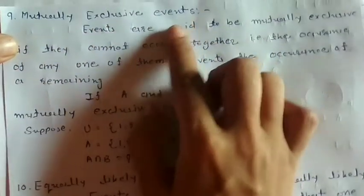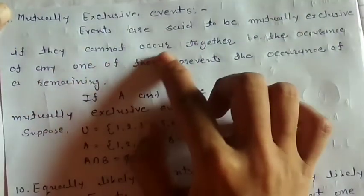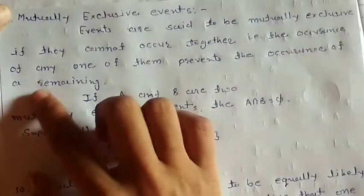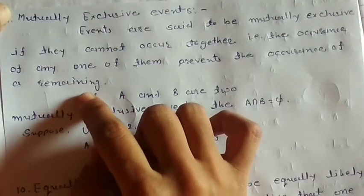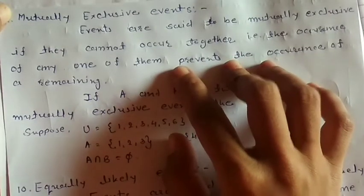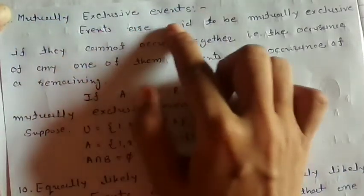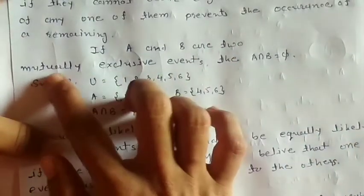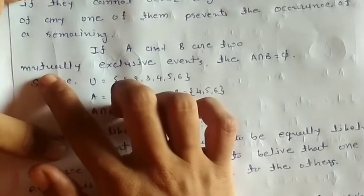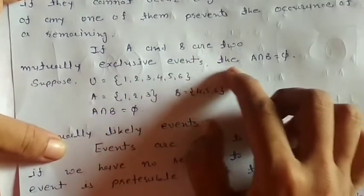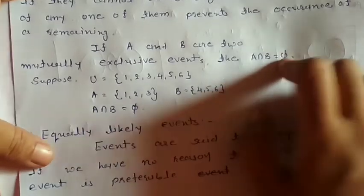Number 9: Mutually Exclusive Events. Events are said to be mutually exclusive if they cannot occur together. For example, the occurrence of any one of them prevents the occurrence of the remaining. That means when one event occurs, all the other events are not possible — we call these mutually exclusive events.